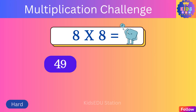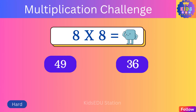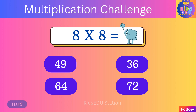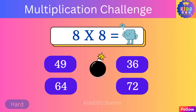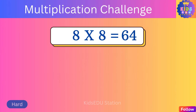What is eight times eight? Forty-nine, thirty-six, sixty-four, seventy-two. Eight times eight is sixty-four.